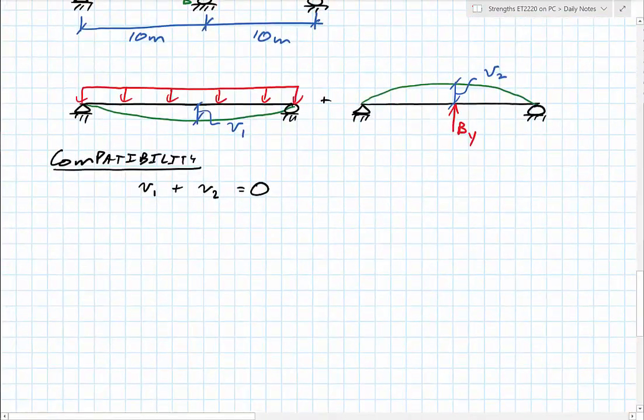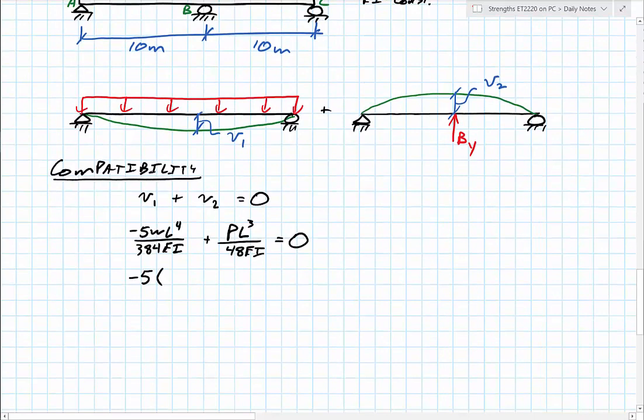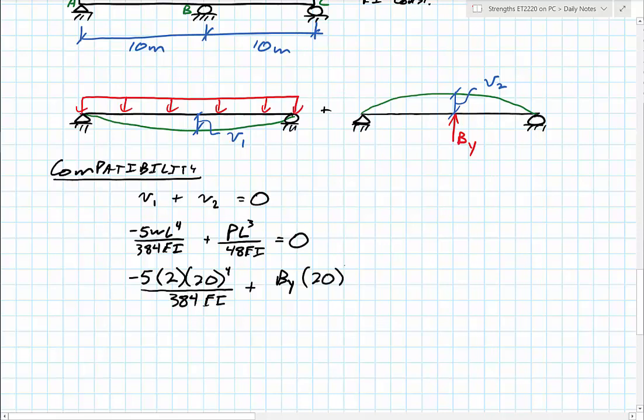So plugging those two in for my deflections, I end up with something like this. That's just the equations. Now I'm going to put in my actual numbers. So the W that we had was two kilonewtons per meter. The length is 20 meters, because it's the entire length, to the fourth power, over 384 EI. BY is my unknown. That's my p-value in the equation. Length being 20 again. And now this is cubed over 48 EI. And the whole thing must be equal to zero. So because at zero, my EIs go away. And I can solve for my only unknown, BY. And end up with BY is 25 kilonewtons.